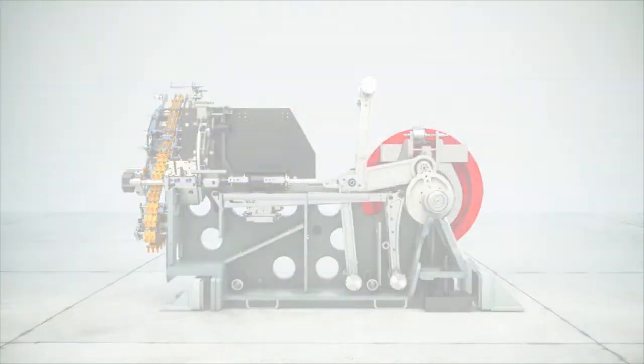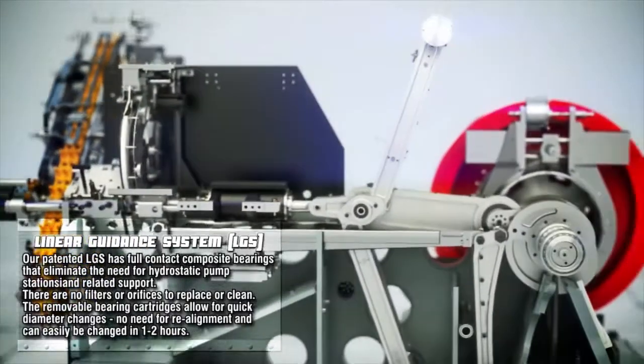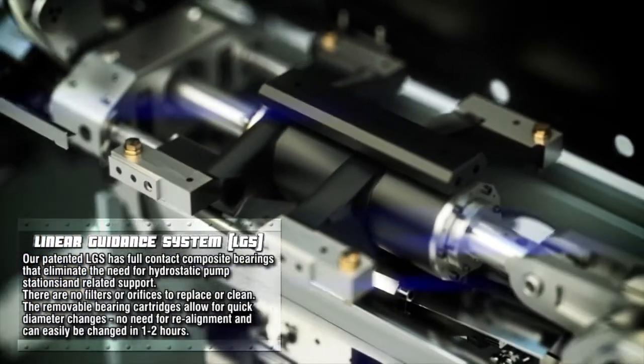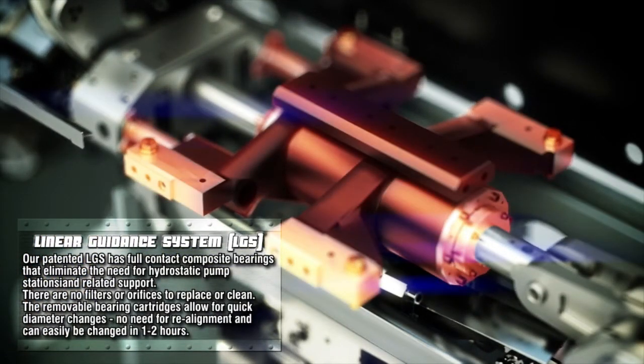Our patented linear guidance system has full-contact composite bearings that eliminate the need for hydrostatic pump stations and related support. There are no filters or orifices to replace or clean. The removable bearing cartridges allow for quick diameter changes, no need for realignment, and can easily be changed in one to two hours.